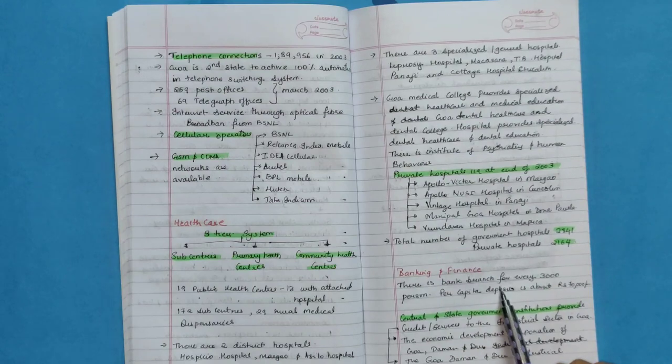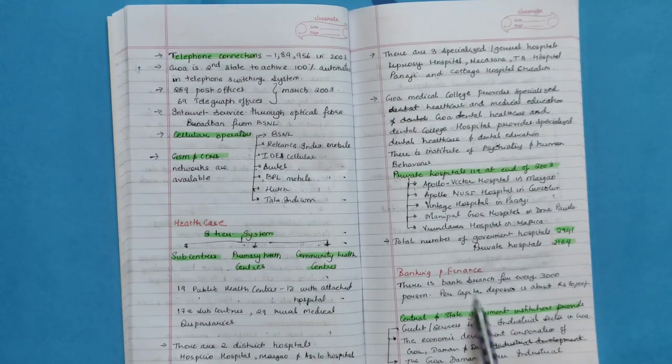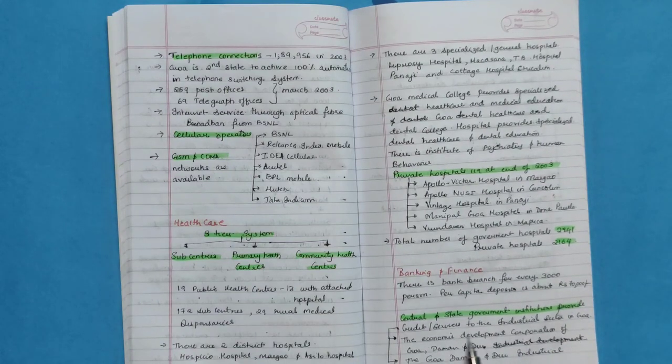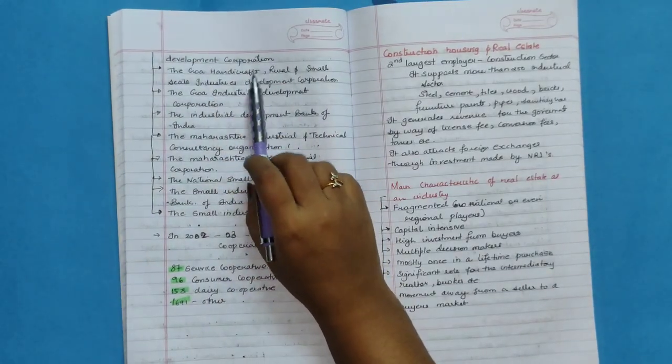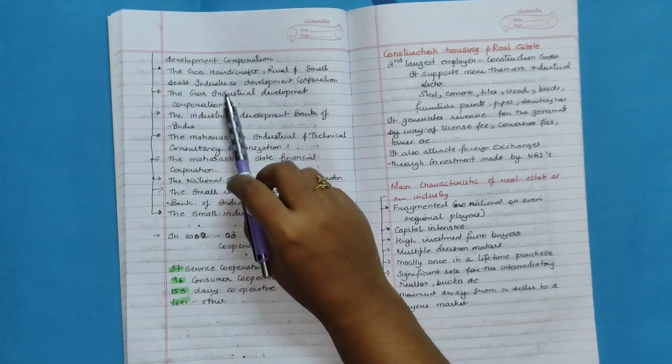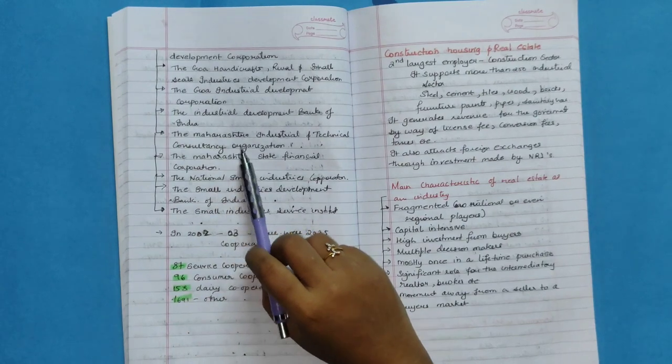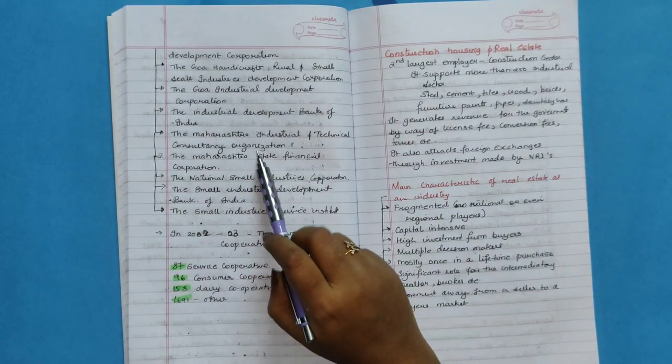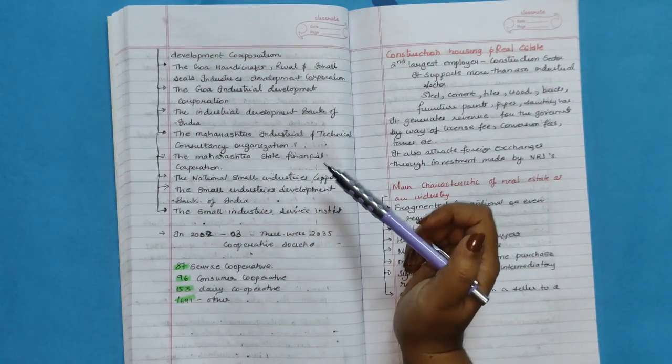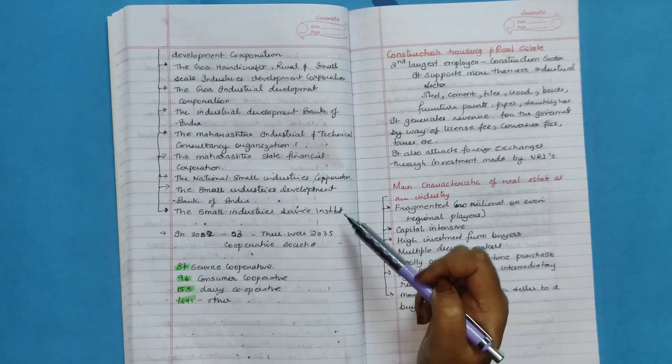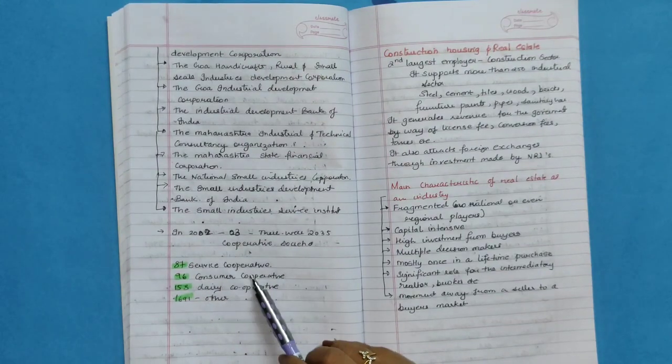Banking and finance. There is bank branch for every 3,000 person. Per capita deposits is about 70,000. Central and state government institutions provide credit services to the industrial sector in Goa: the Economic Development Corporation of Goa Daman and Diu, the Goa Daman and Diu Industrial Development Corporation, the Goa Handicraft Rural and Small Scale Industry Development Corporation, the Goa Industrial Development Corporation, the Industrial Development Bank of India, the Maharashtra Industrial and Technical Consultancy Corporation, the Maharashtra State Financial Corporation, the National Small Industry Corporation, the Small Industrial Development Bank of India, the Small Industry Service Institution.